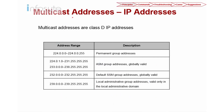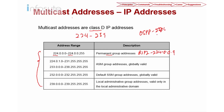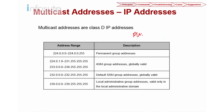Now let's look at multicast IP addresses. Multicast uses Class D addresses in the range 224.0.0.0 to 239.255.255.255. Within this, 224.0.0.0 to 224.0.0.255 are permanent group addresses used by protocols — for example, RIP version 2 uses 224.0.0.9, OSPF uses 224.0.0.5 and 224.0.0.6, and PIM (Protocol Independent Multicast) uses 224.0.0.13 for communication.